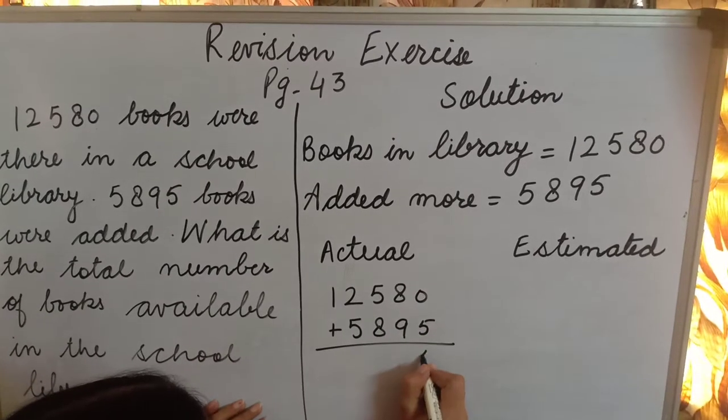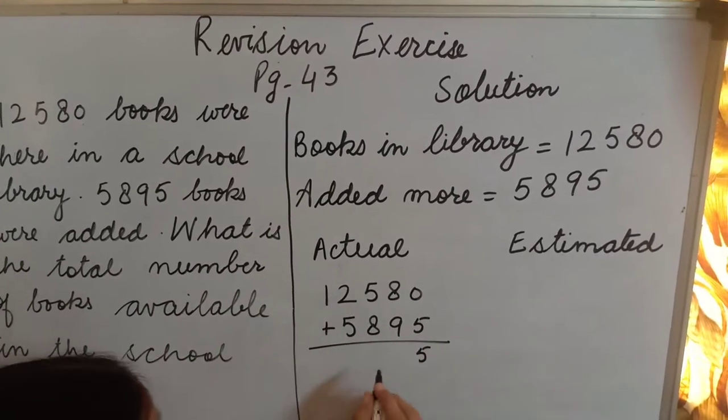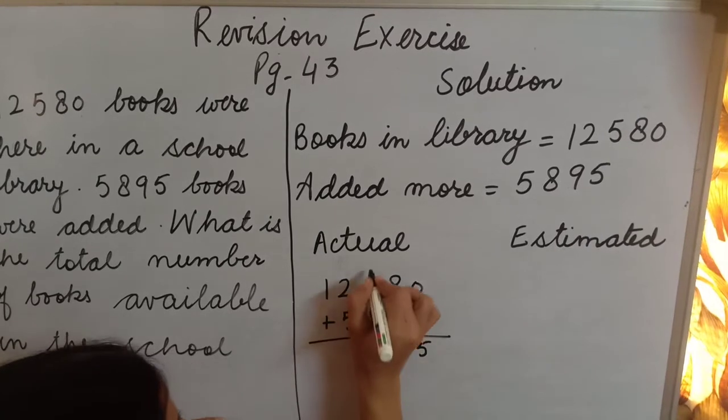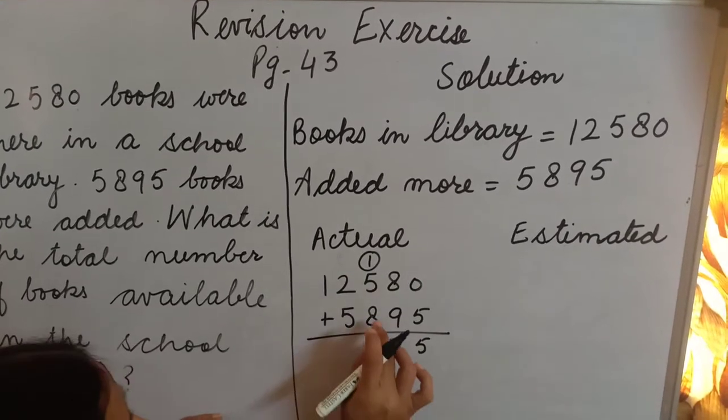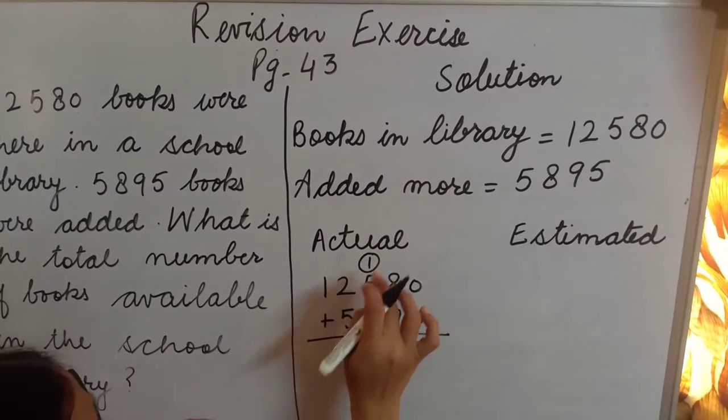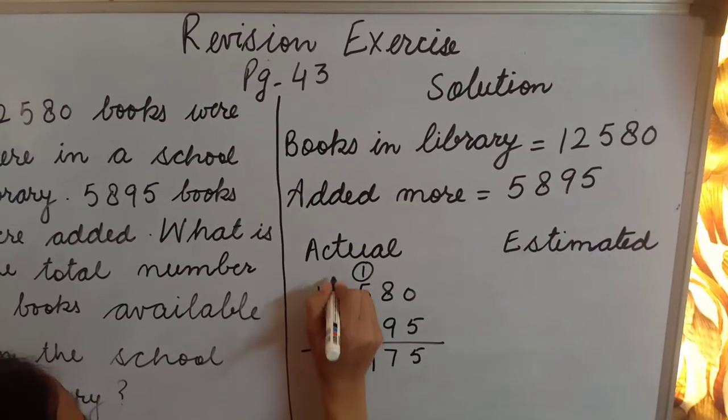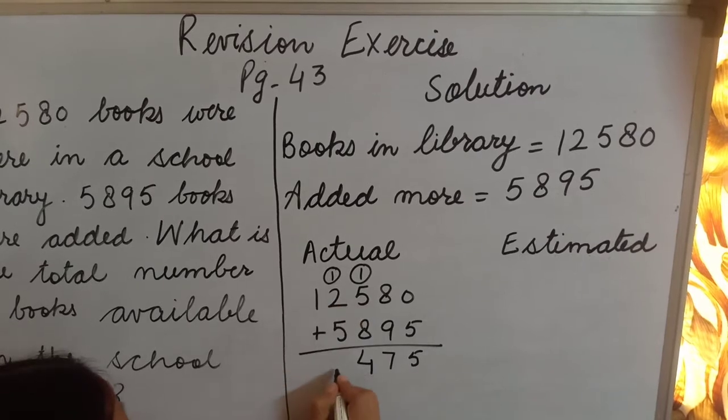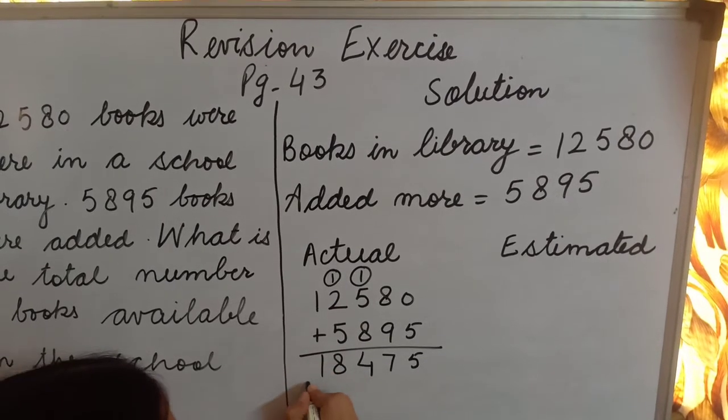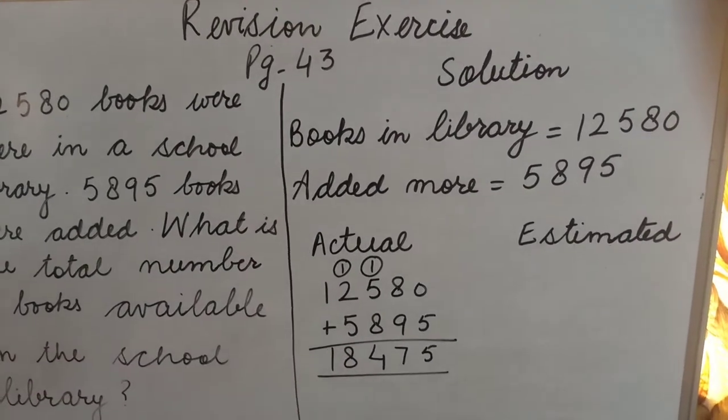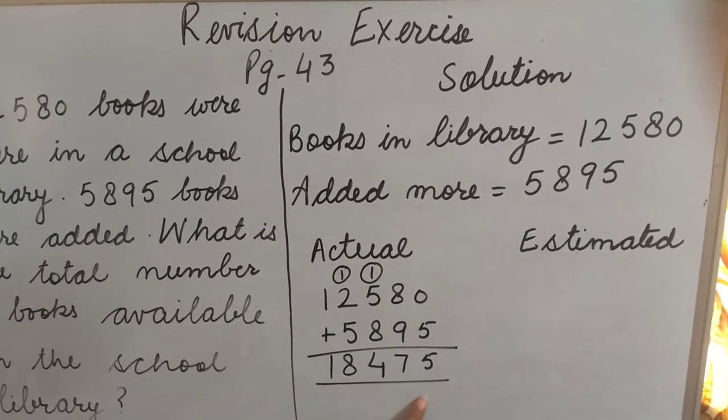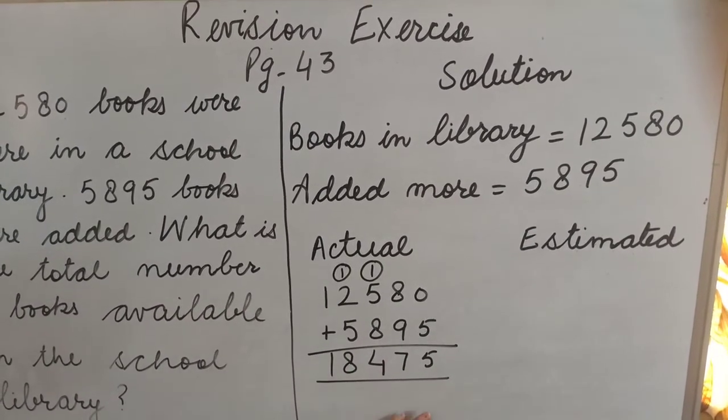5 plus 0 is 5. 8 plus 9 is 17, plus 1 carry. 8 plus 1, 9 plus 5 is 14. 5, 6, 7, plus 1 is 8, and 1. These are the 18,475 actual number of books.